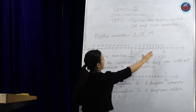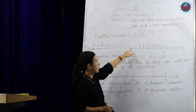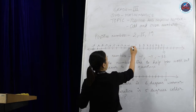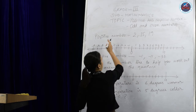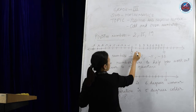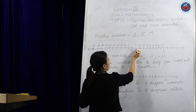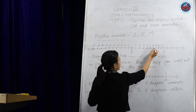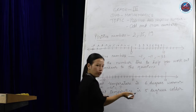We have this number line here. Zero is in the middle, and for the positive numbers — numbers which are greater than zero — the numbers go on like this: 1, 2, 3, 4, 5, 6, 7, 8, 9, 10, and so on.